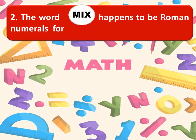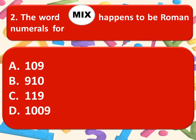The next one is the word mix. M-I-X happens to be Roman numerals for. Here are the options. Option A, 109. Option B, 910. Option C, 119. Or option D, 1009. So, think about the correct answer. And the correct answer is option D, 1009.